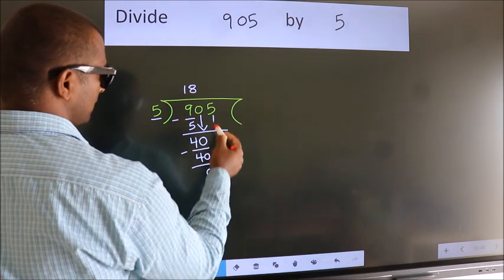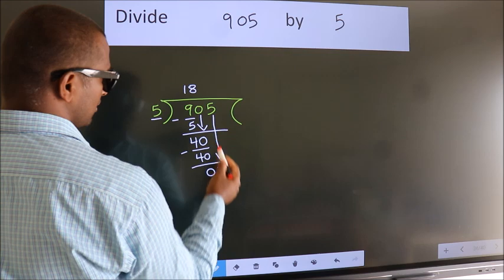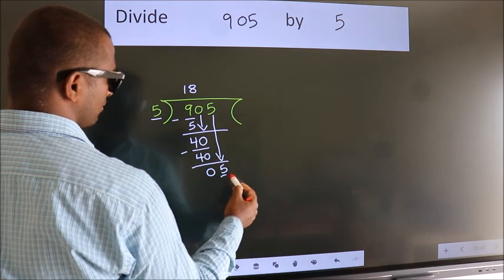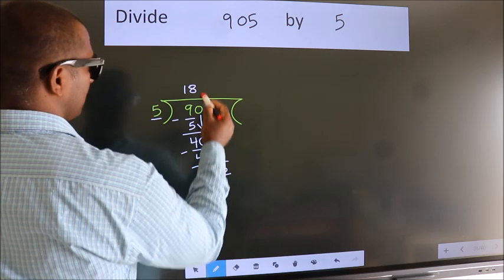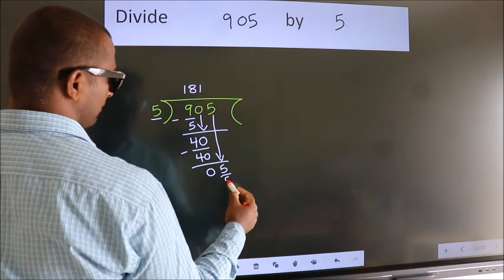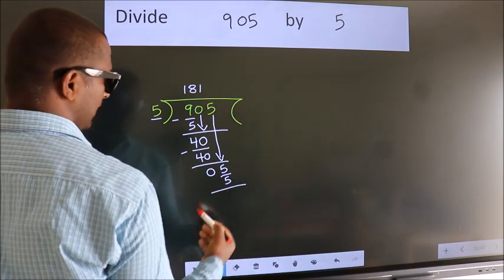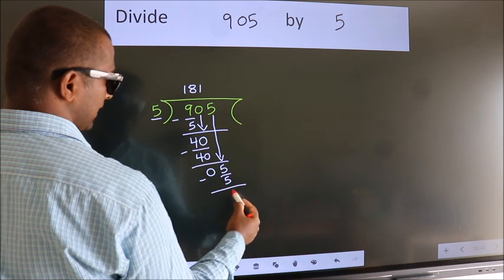After this, bring down the beside number. So, 5 down. So, 5. When do we get 5 in the 5 table? 5 once 5. Now we subtract. We get 0.